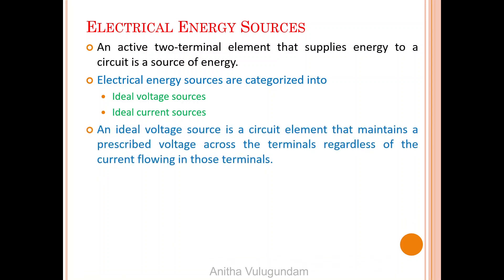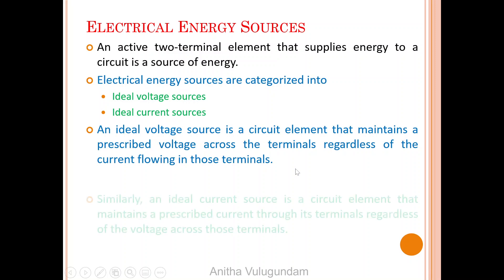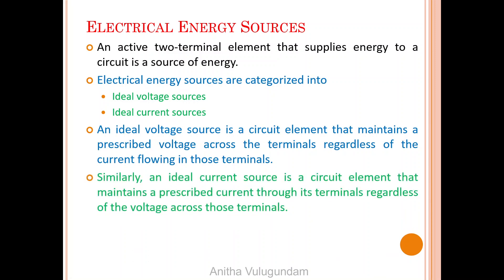An ideal voltage source is a circuit element that maintains a prescribed voltage across the terminals regardless of the current flowing in those terminals. Whereas an ideal current source is a circuit element that maintains a prescribed current through its terminals regardless of the voltage across those terminals.